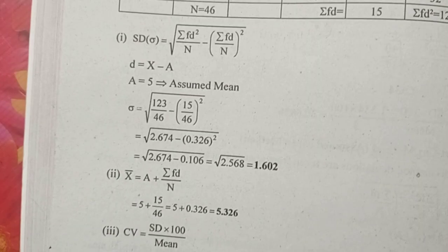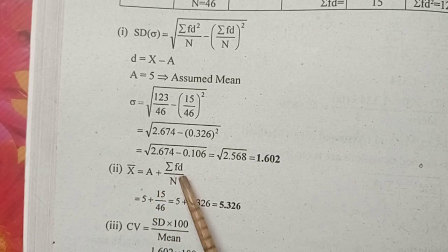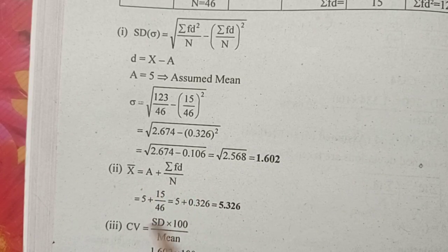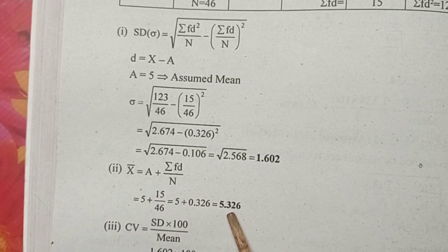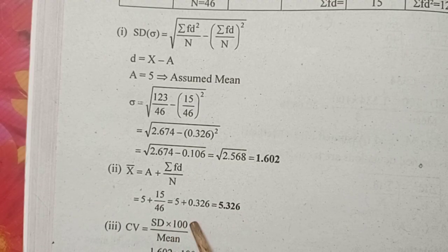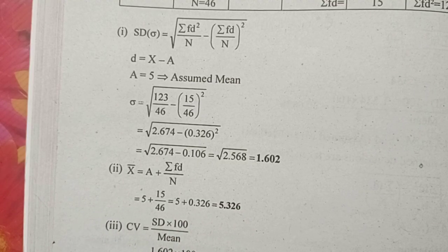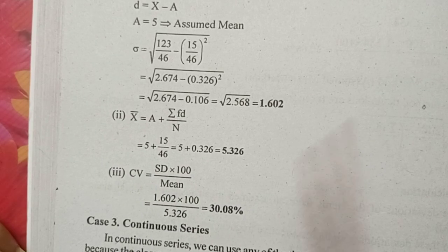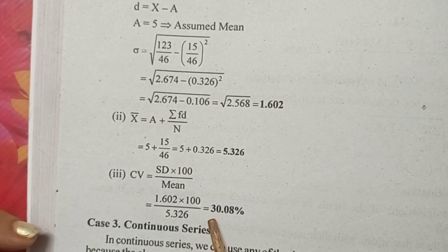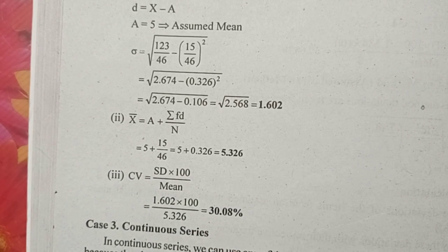For the coefficient of variance, the mean is calculated as: assumed mean plus sigma fd divided by n, which gives 5.326. Coefficient of variance equals standard deviation divided by mean, multiplied by 100. The answer is 30.08 percent.